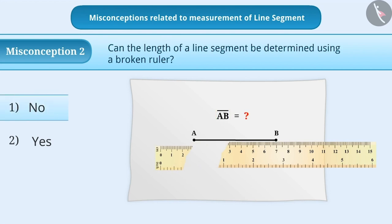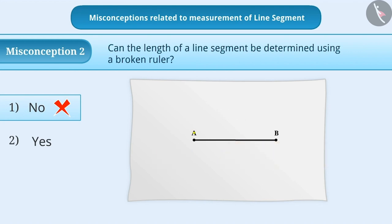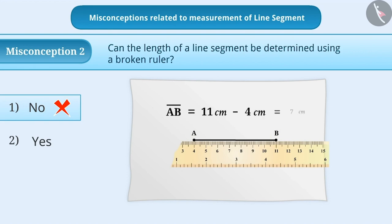With this understanding, they give the incorrect answer as option 1. The correct understanding is that we can measure the length of any line segment using a broken ruler. Like here, if we keep point A on 4 cm, then point B will be on 11 cm. Now we can identify length of line segment as 11 cm minus 4 cm equals 7 cm.